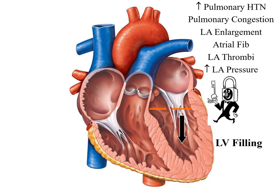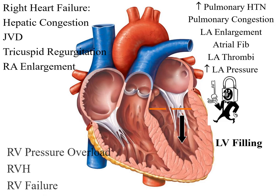Because of left atrial enlargement there are chances of atrial fibrillation, and if there is atrial fibrillation there are chances of left atrial thrombus. If a left atrial thrombus goes to the left ventricle it may enter the systemic circulation, leading to stroke and other complications. Right heart failure also causes hepatic congestion, raised JVP, tricuspid regurgitation, and right atrial enlargement.